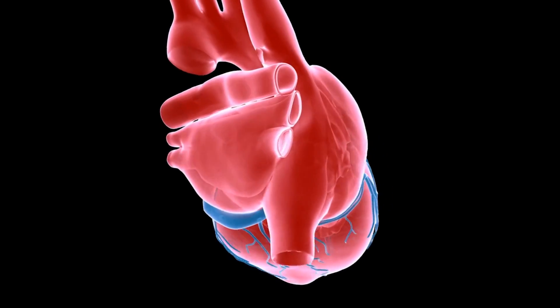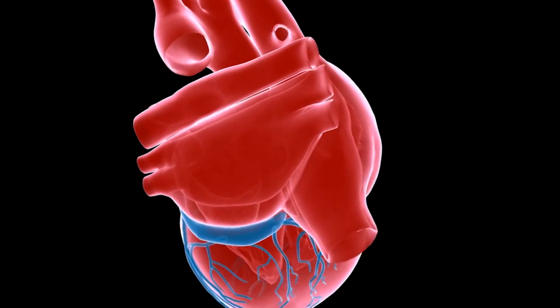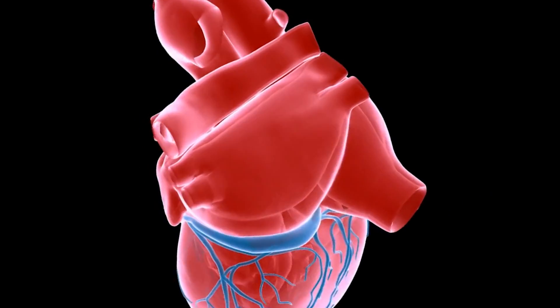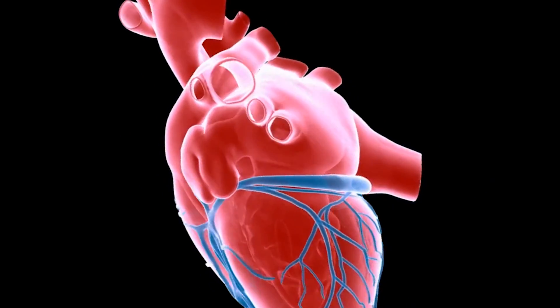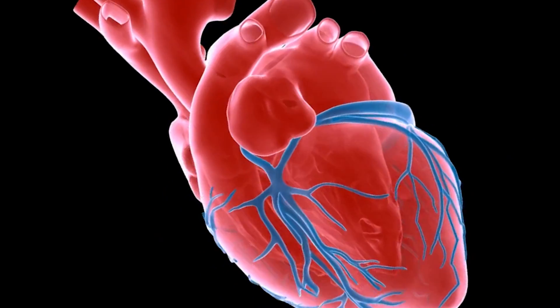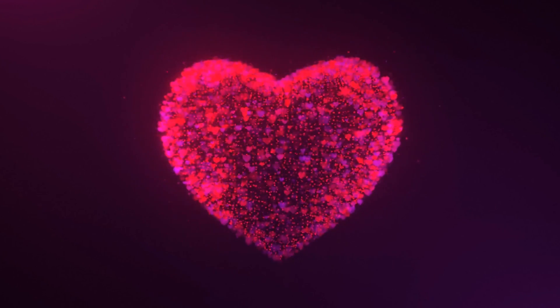Inside your chest is an asymmetrical lump of muscle that's devoid of emotion and not particularly romantic. Despite this, we persist in using an anatomically incorrect heart shape to depict the coronary organ, which we erroneously imbue with sentimental characteristics.